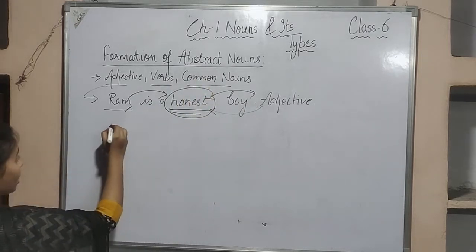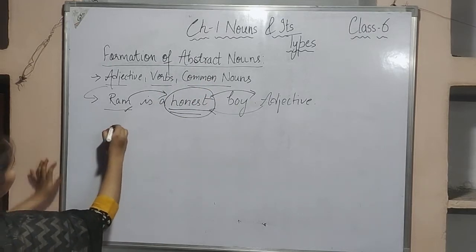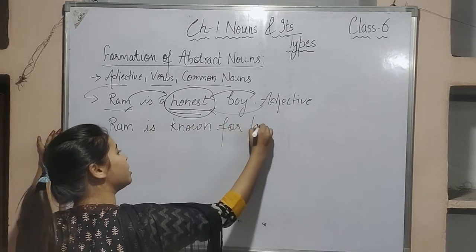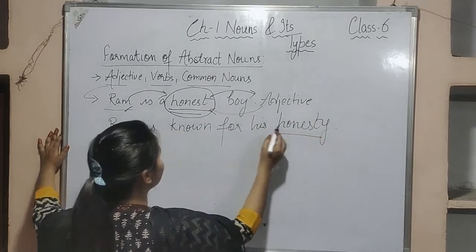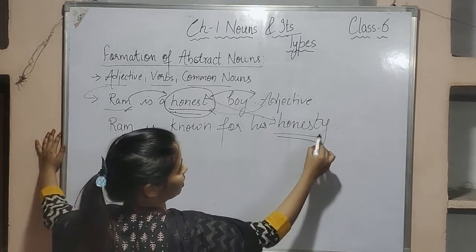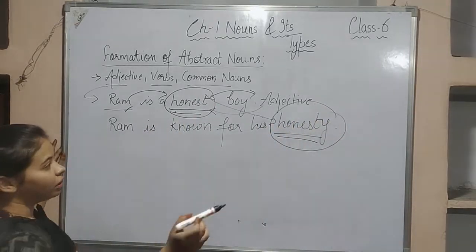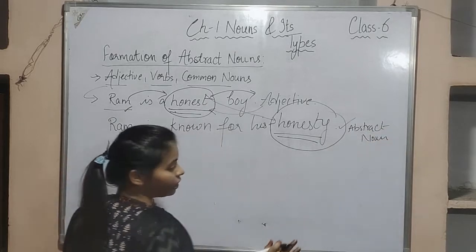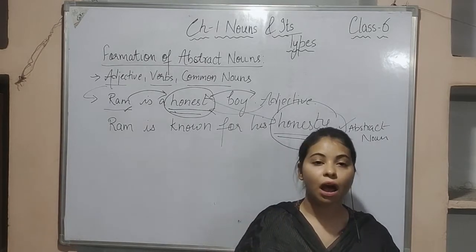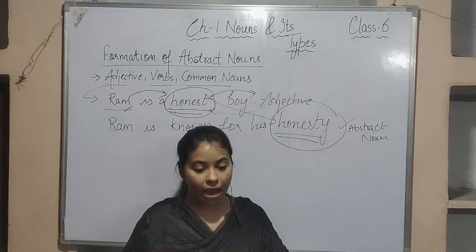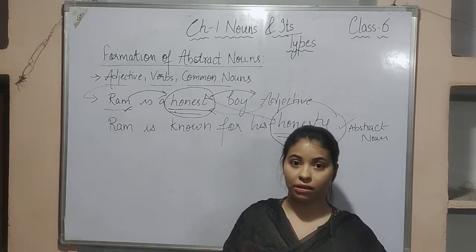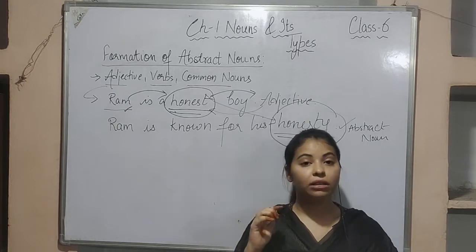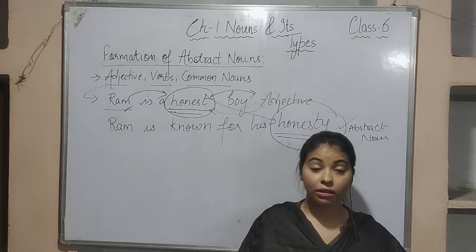Another example: 'Rohan is a punctual boy' — punctual means someone who is always on time, and it is an adjective. 'His punctuality leads him to success' — when we add '-ty' to 'punctual,' it becomes 'punctuality,' which is an abstract noun. I am going to tell you different rules for how to form abstract noun using adjective.